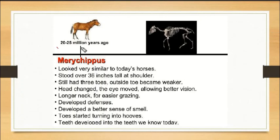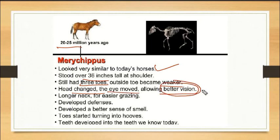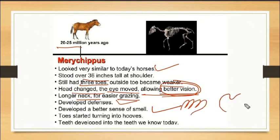Merychippus, from 20 to 25 million years ago, looked very similar to today's horses. It stood 36 inches at the shoulder. It had 3 toes and the outside toes were weak. The head shape changed and movement improved. It had better vision and a long neck, making it easier to graze. It developed better defenses, a better sense of smell, and the toes started turning into hooves. The teeth developed into the teeth we know today.